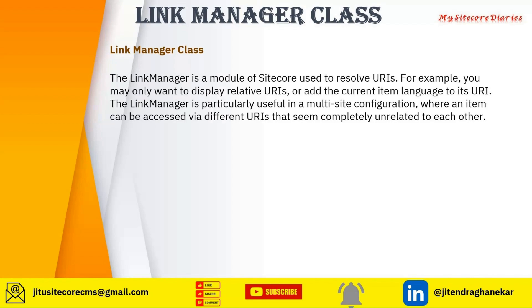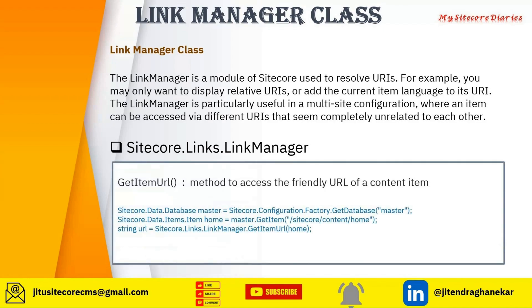The namespace is Sitecore.Links.LinkManager, and it has multiple methods. One of them is the GetItemUrl method, which is used to access the friendly URL for a content item.